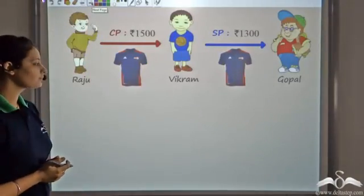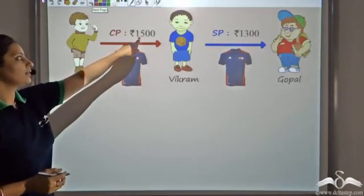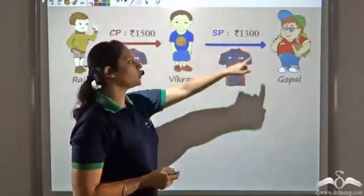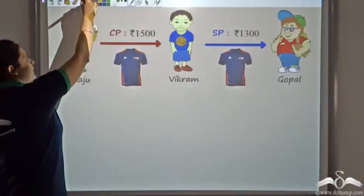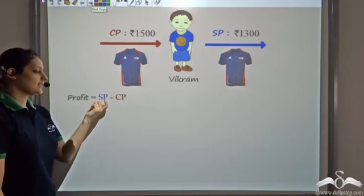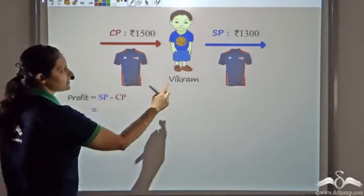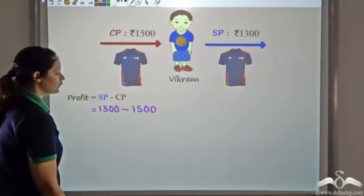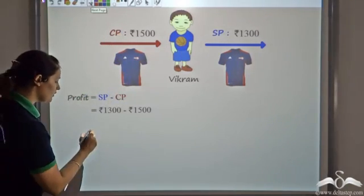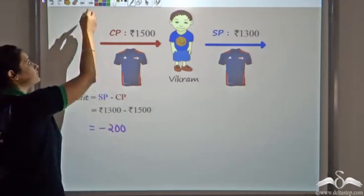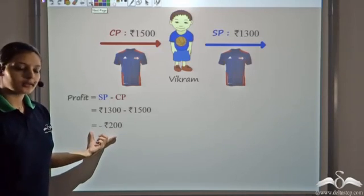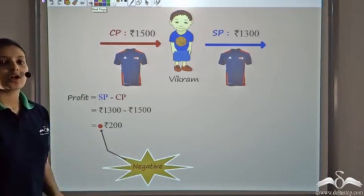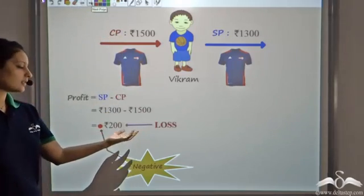Let's look at Vikram's transactions. Vikram bought the t-shirt from Raju at 1500 rupees, so Vikram's CP is 1500 rupees. Vikram's SP is 1300 rupees — he sold it to Gopal at 1300 rupees. Gain or profit is SP minus CP, so 1300 minus 1500 gives negative 200. The profit comes out to be negative 200, and whenever profit is negative, we call it a loss.